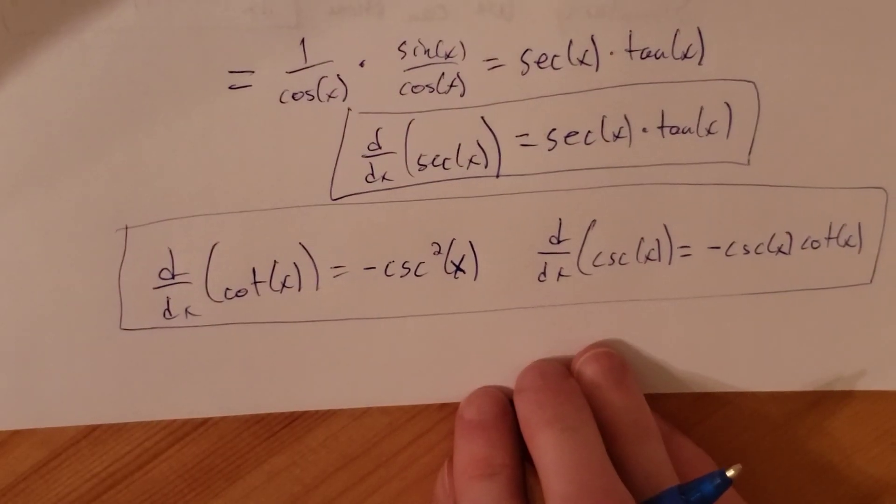The derivative of sine of x over cosine of x using the quotient rule is: the denominator cosine of x, times the derivative of the numerator which is cosine of x, minus the numerator sine of x times the derivative of the denominator which is negative sine of x, all over the denominator squared. This gives us cosine squared plus — because we have two negatives — plus sine squared, all over cosine squared of x.